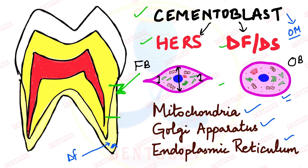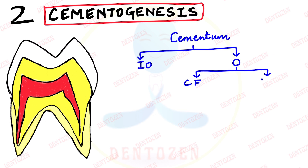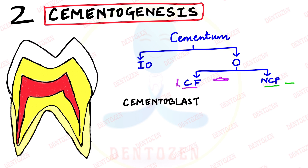Now we come to the second part of the video: cementogenesis. Cementum is mainly made up of inorganic and organic material. The organic component is mainly collagen fibers and lesser amounts of non-collagenous proteins and other substances. For our understanding, we are dividing the formation of cementum into steps. In the first step, cementoblasts lay down collagen fibers.